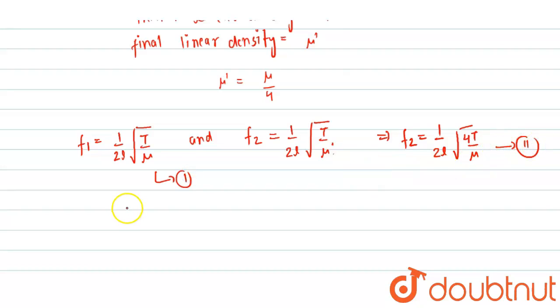Okay, now when we divide one by two, we get that f1 upon f2 is equal to one upon two l, square root of t upon mu,